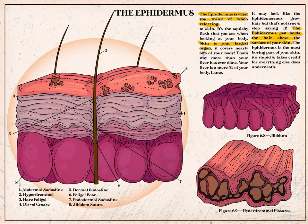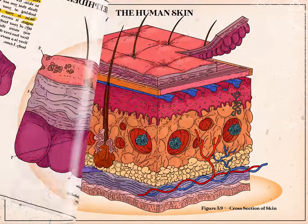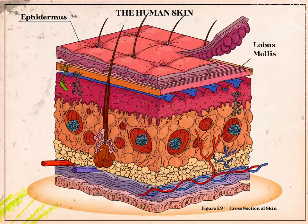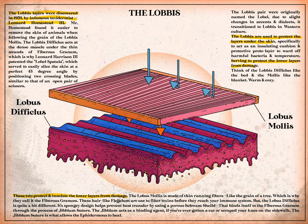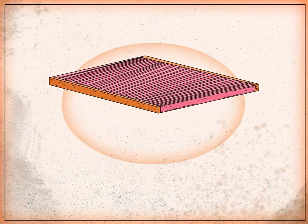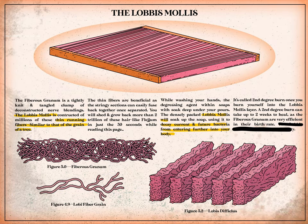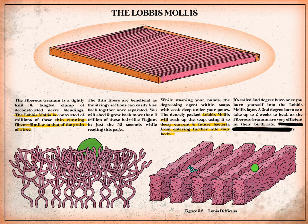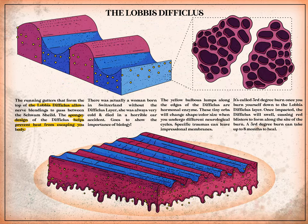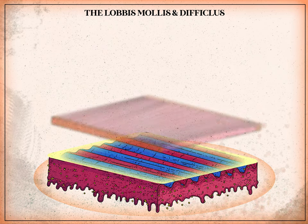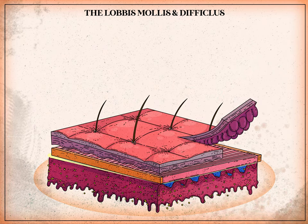It's full of tiny pores that sprout hair, but underneath there's a lot to learn. We have the lobus molus and the lobus difficlus, which protect and insulate the lower layers from damage. The lobus molus is made of thin running fibers like the grain of a tree, which is why they call it the fibrous granum. These hair-like flagellum filter toxins before they reach your immune system. The lobus difficlus has a spongy design that prevents heat transfer using a porous schwamm shield, bound to the fibrous granum through gibulum suture.